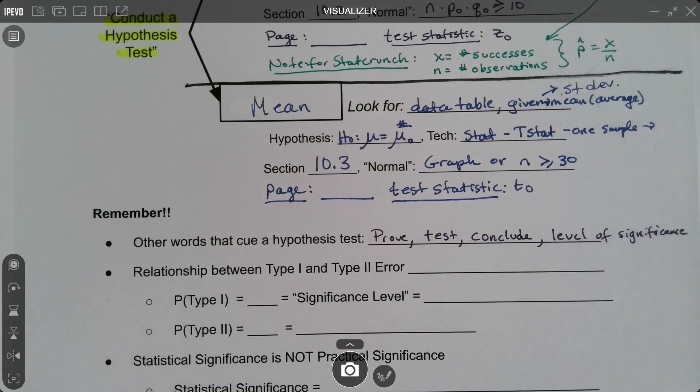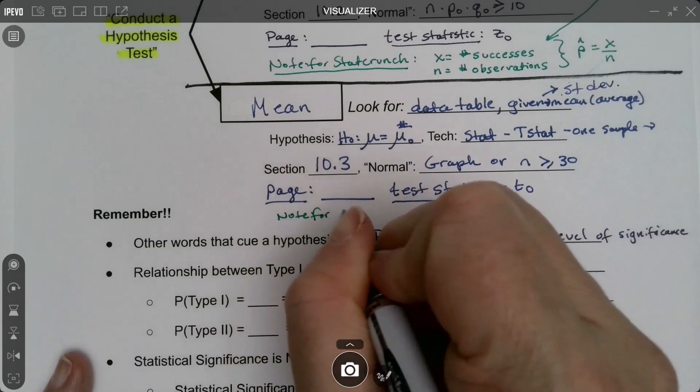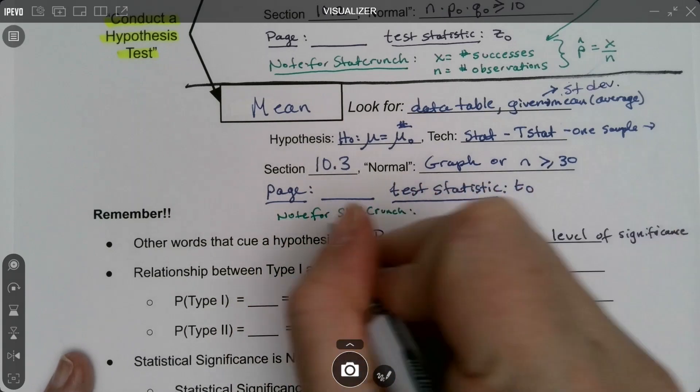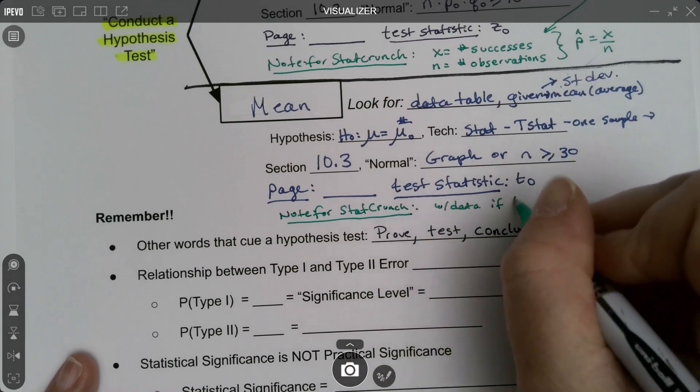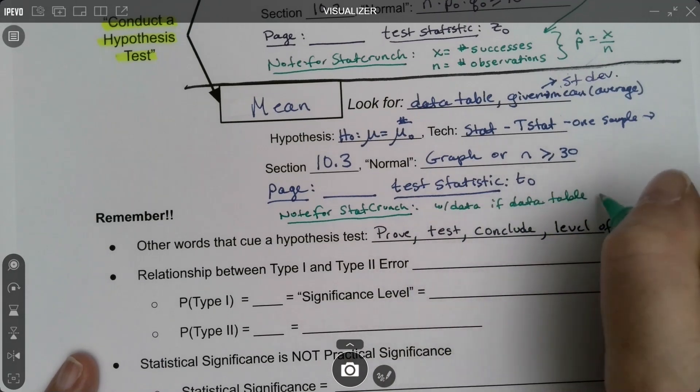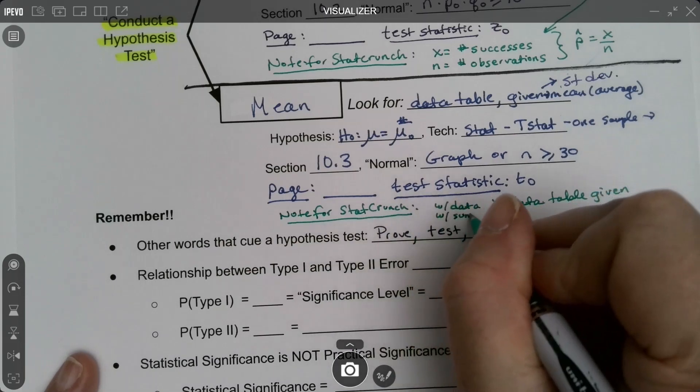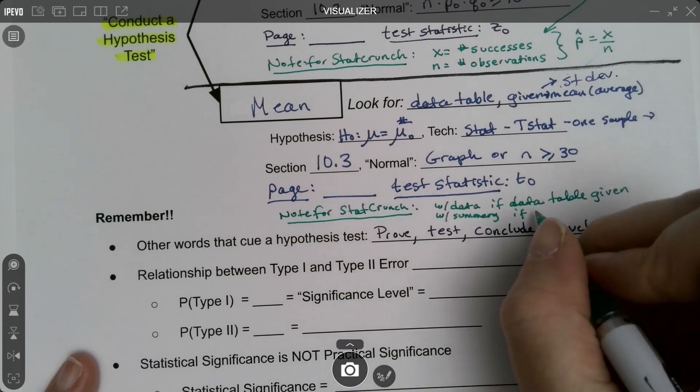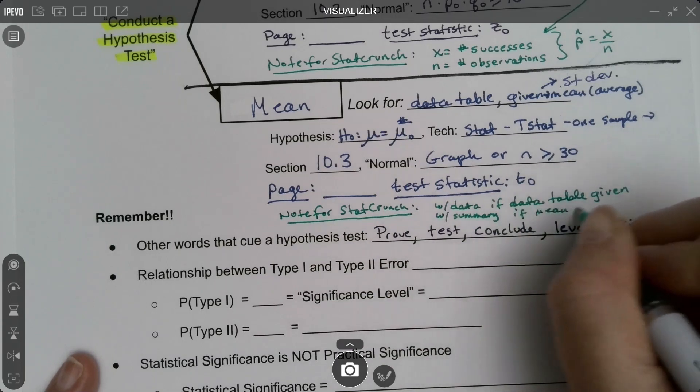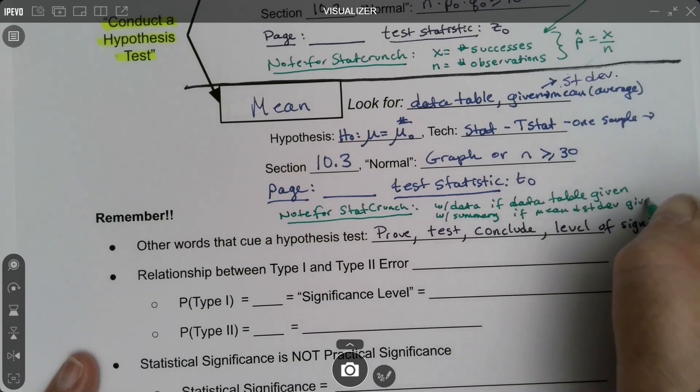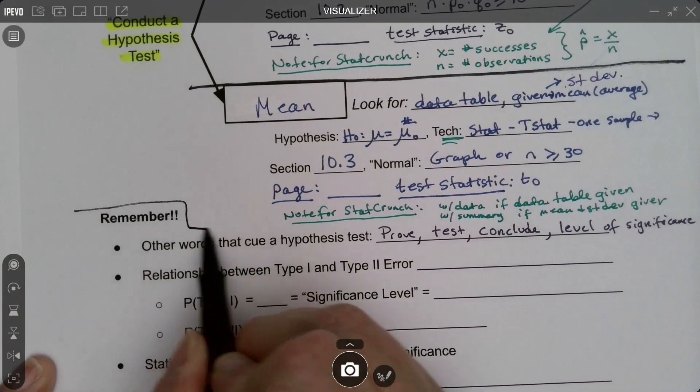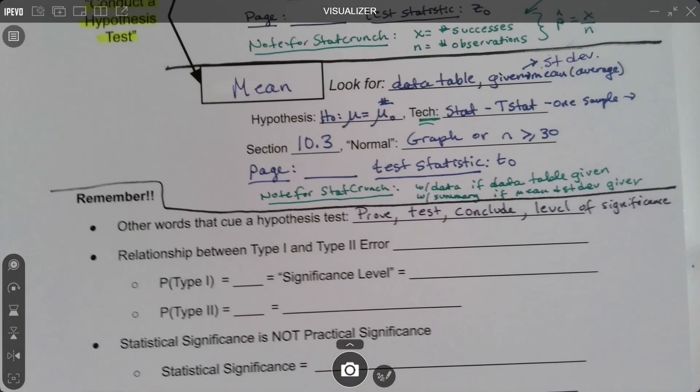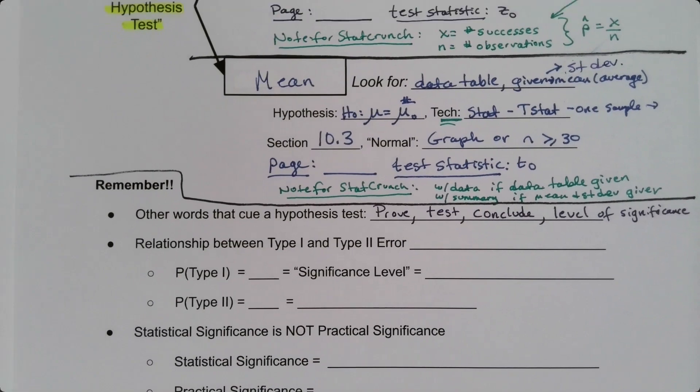The note for StatCrunch I want to make about this one is that you choose 'with data' if data table is given. You choose 'with summary' if mean and standard deviation are given. So that's how you can tell what to do with your technology. I'm going to separate this just so we're all clear.